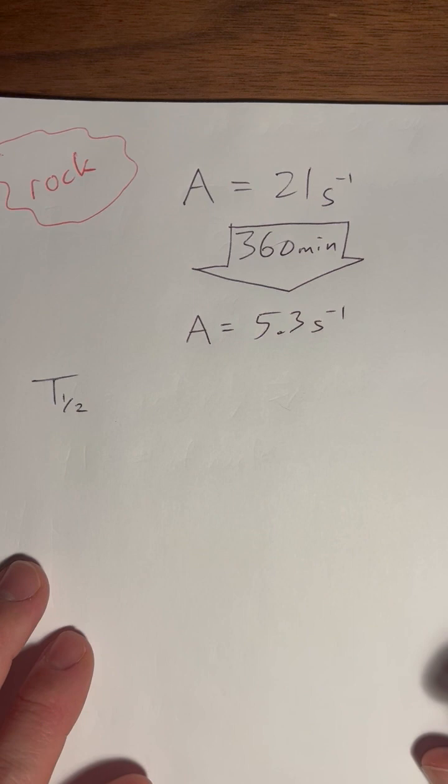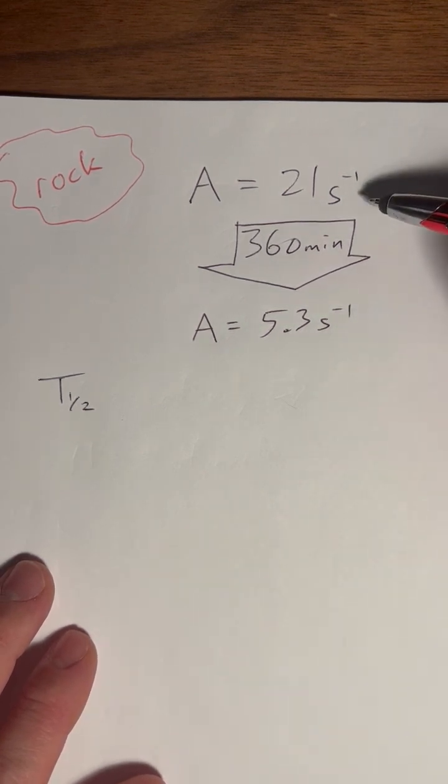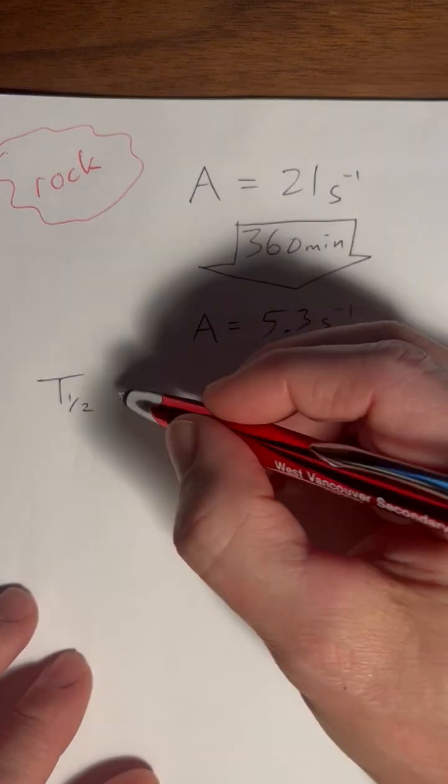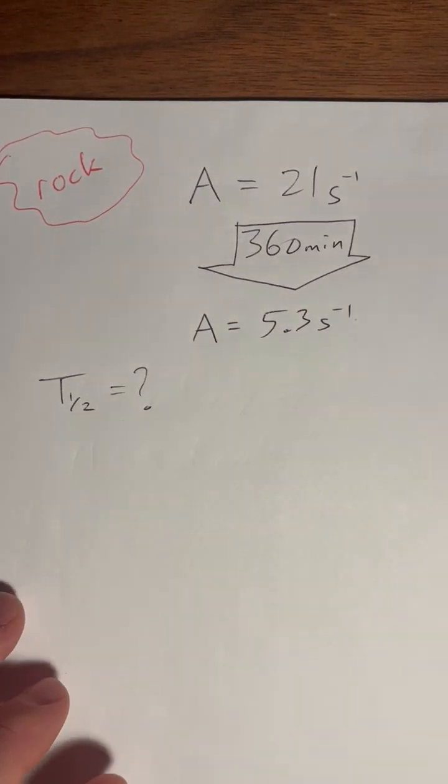Okay. And so lambda is ln of two over half-life and half-life is ln of two over lambda. So here's your rock and here's your two activities. One is measured and then you wait 360 minutes and you measure the other one. What's the half-life? So pause it here and try to solve that.